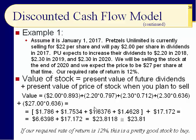Because we're also getting $27 from the sale of the stock in 2020, we use that same PVM for year four — 0.636. Don't go to year five; we're selling in 2020. So $27 times 0.636 equals about $17.17. Add all those values together and you get $23.81. The market is offering us this stock for $22.